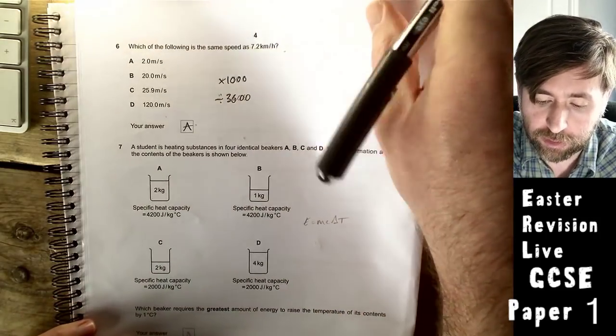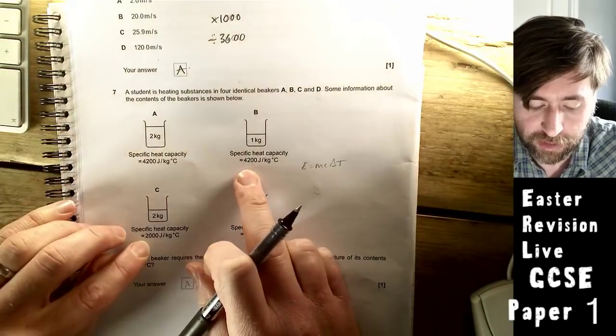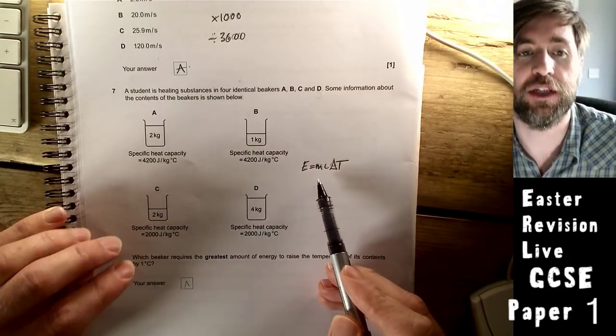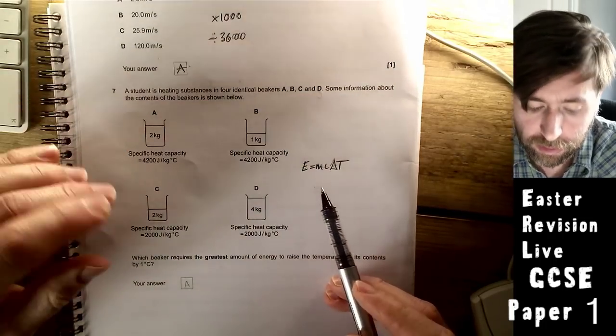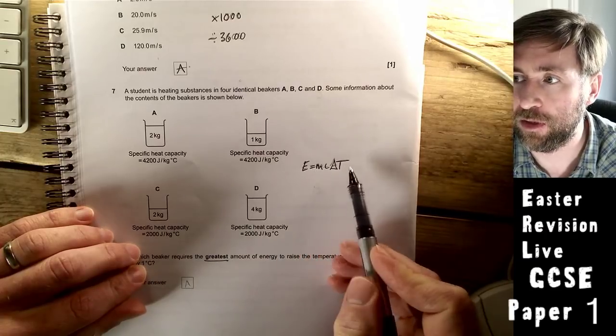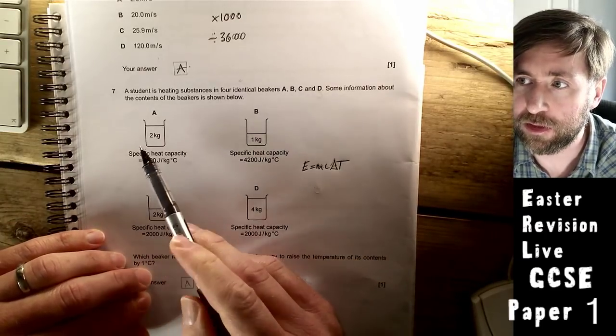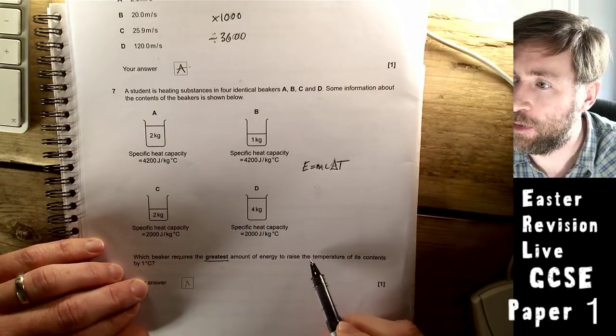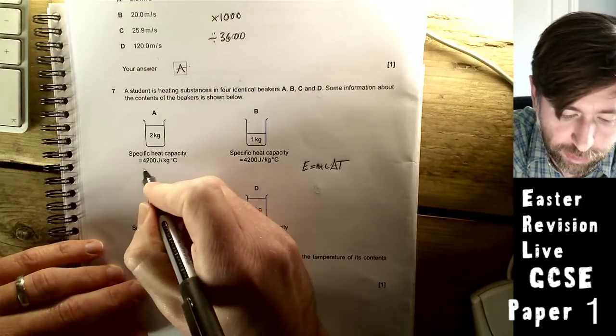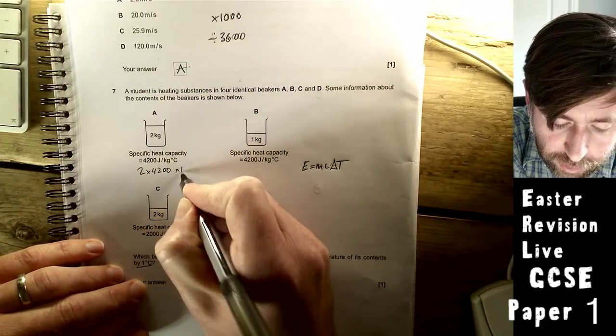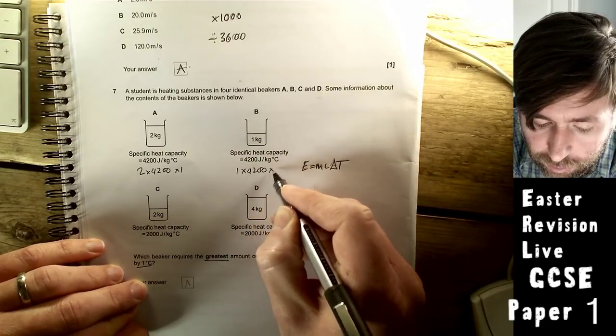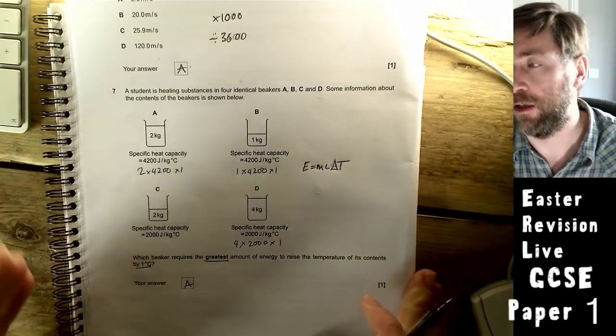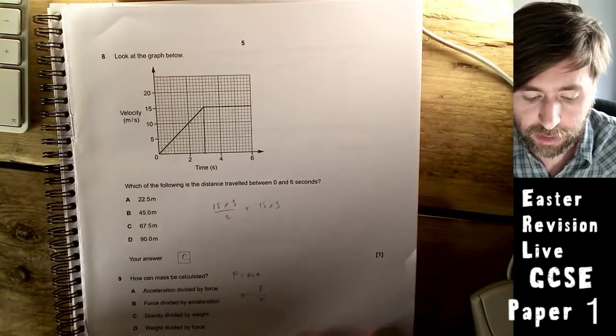A student is heating substances in four identical beakers. Some information about the contents is shown. They give you the mass and the heat capacity. We have to apply this equation. Energy is mass times specific heat capacity times the temperature change. Which one requires the greatest amount of energy? This has got the largest mass and the largest heat capacity. You could just do the multiplication for each one, but this one is obviously the largest. So it's A.